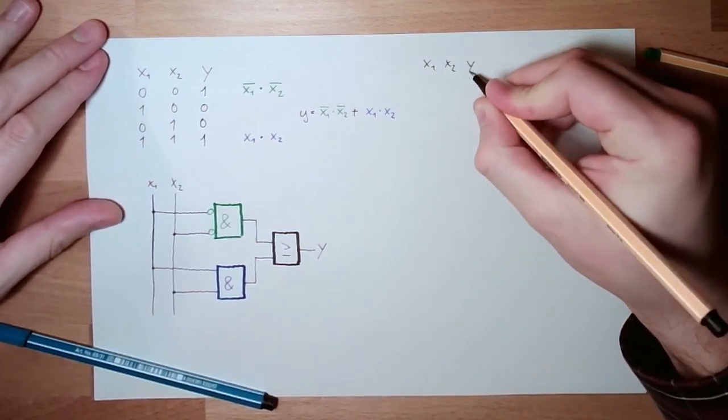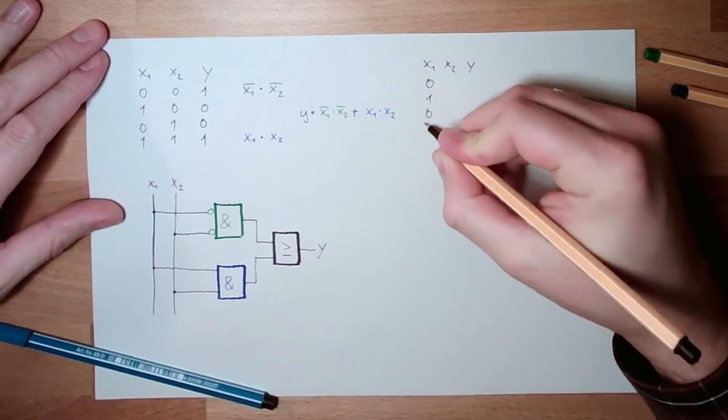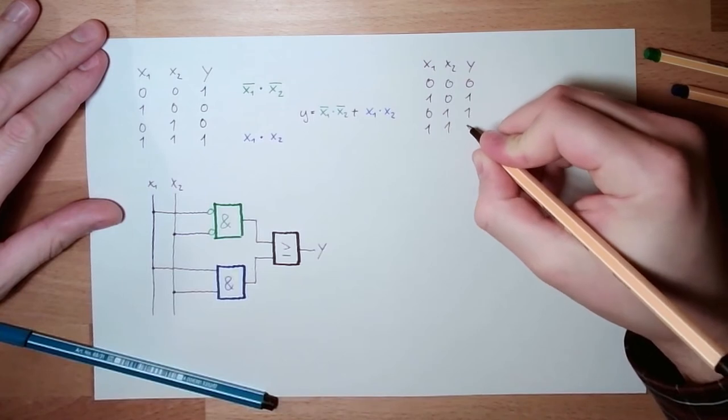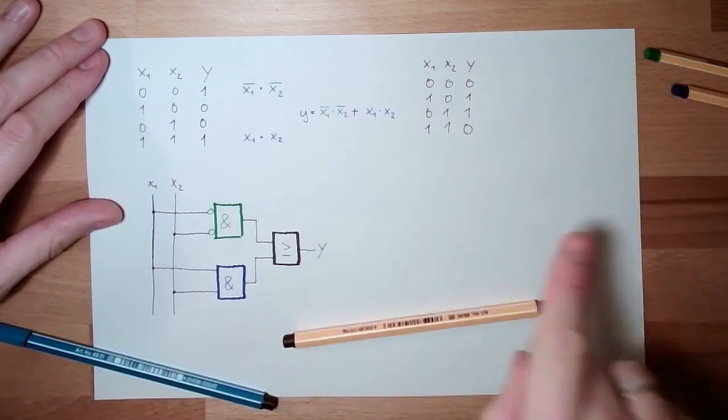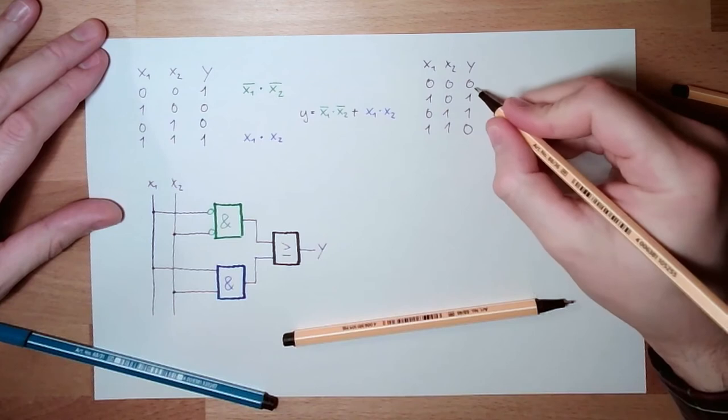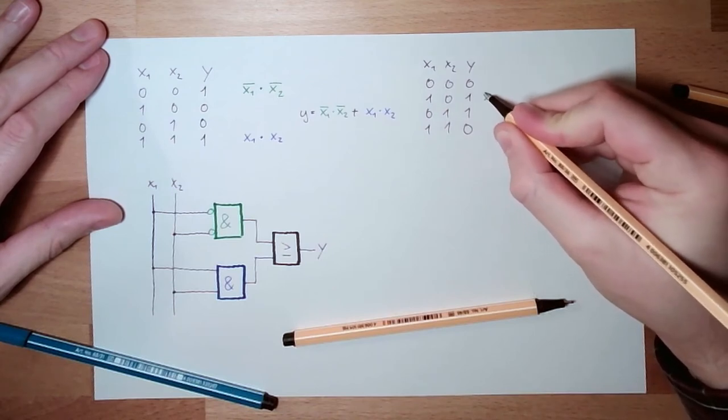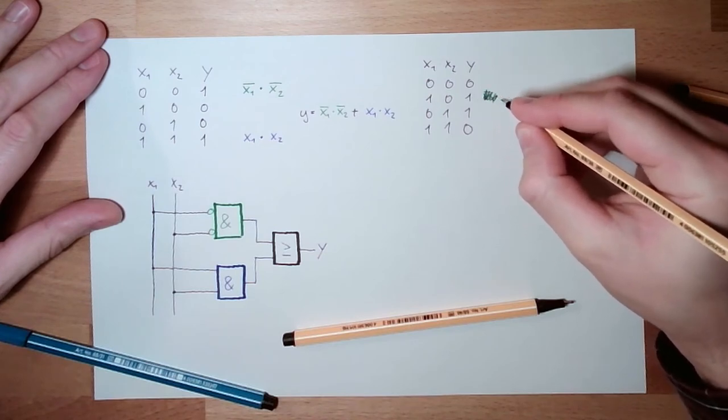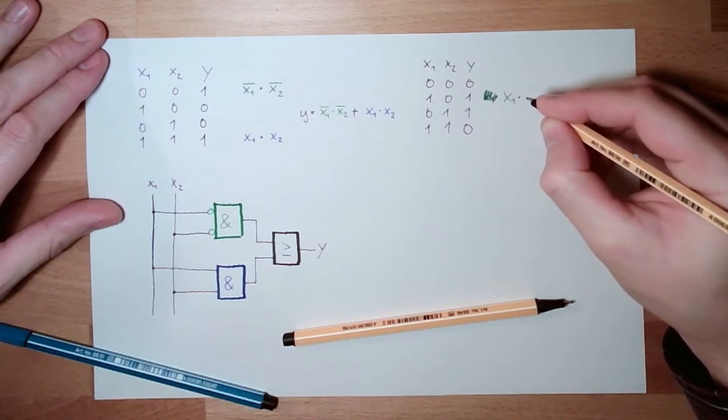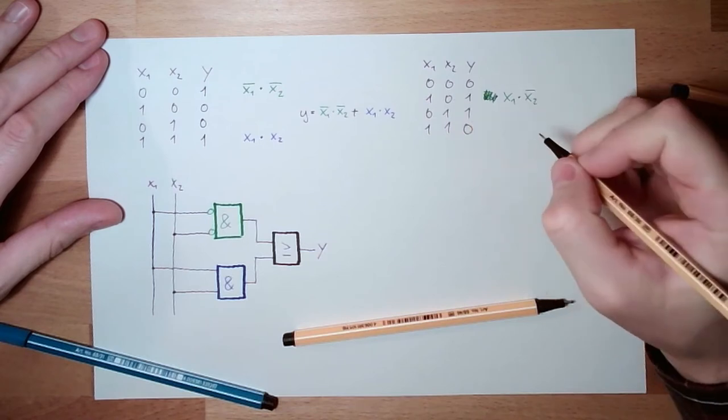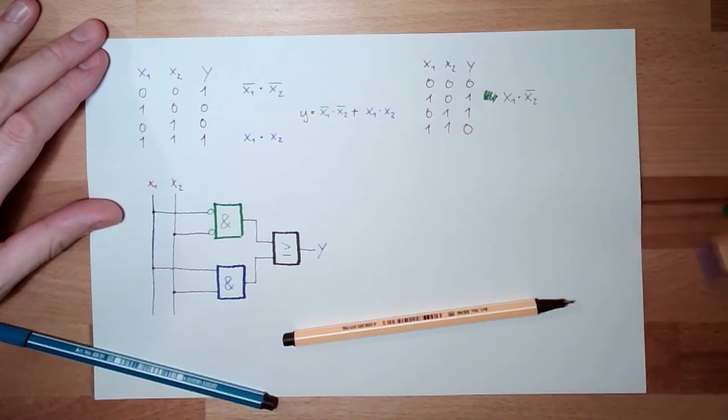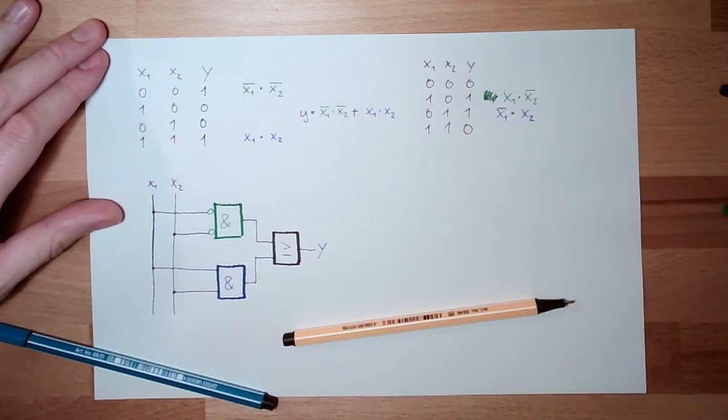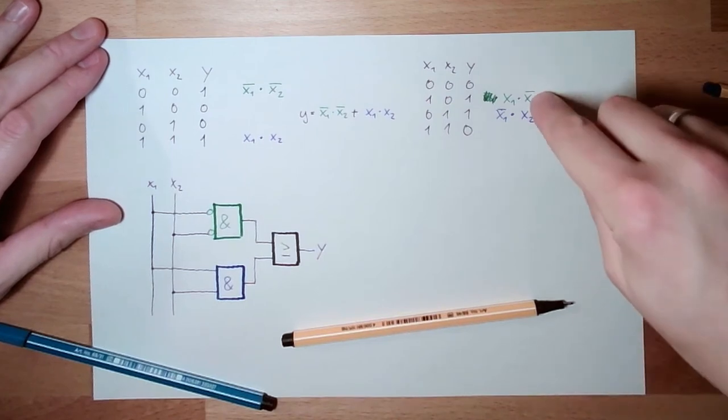X1, X2, Y. 0, 1, 0, 1, 0, 0, 1, 1. And this time we want to have it here, and here, and not here. Let's start again. Here's nothing. Here is NOT X1 and NOT X2. And here we have NOT X1 and X2. And either this or this.